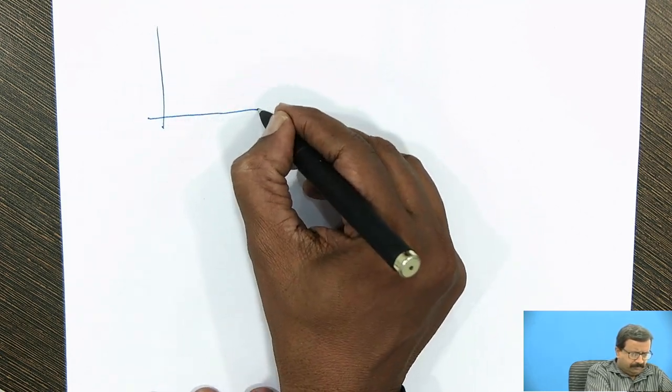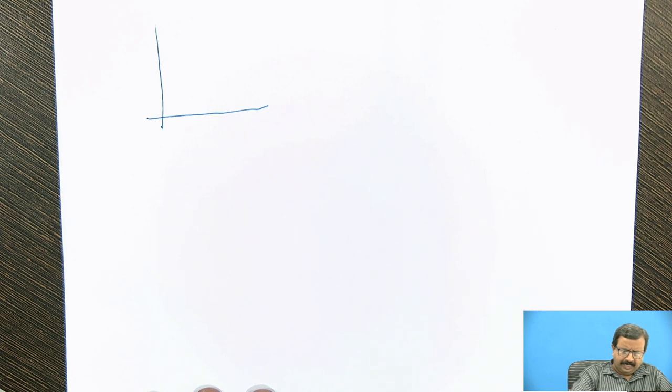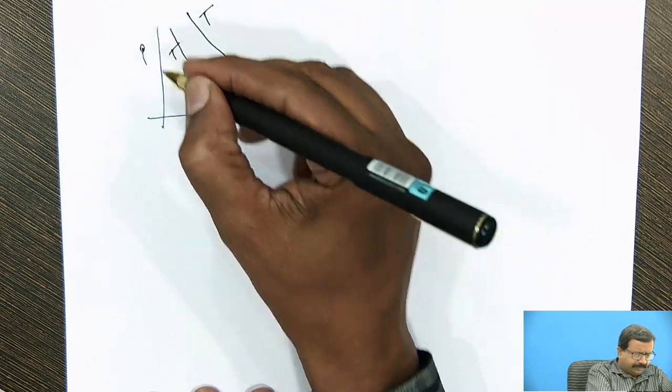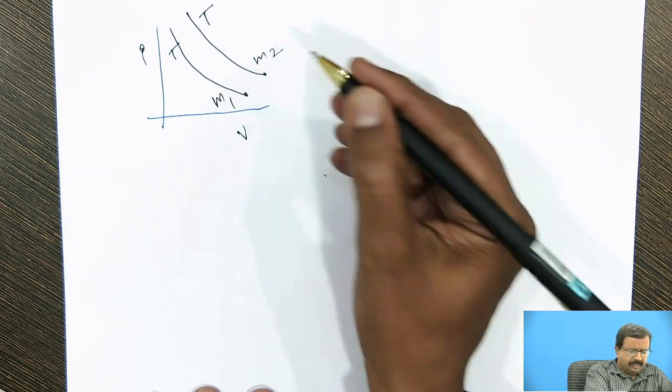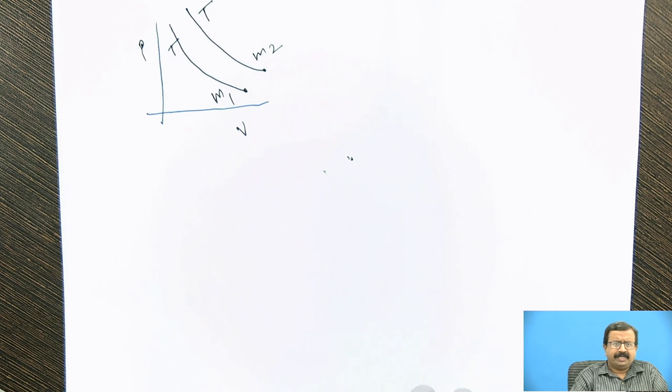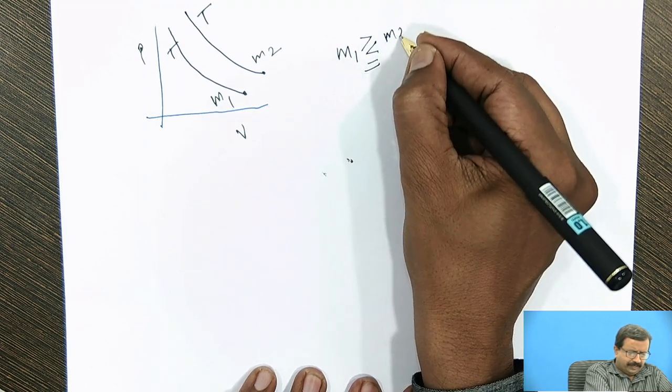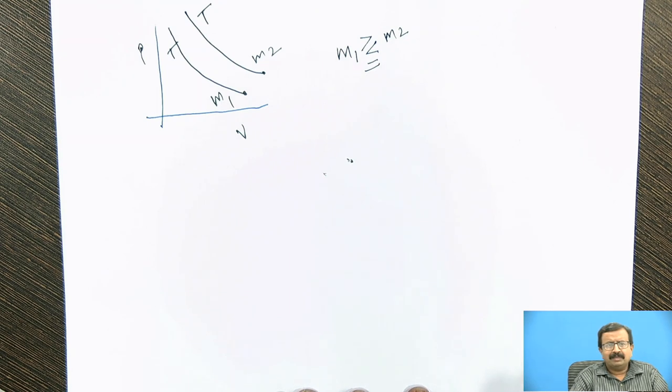Looking at the first law, I will ask a simple question. This is my PV diagram, and on this PV diagram I draw two curves where temperature is same, but the masses are different M1 and M2. My simple question is: if I have two systems with mass M1 and mass M2, and I have maintained the temperature constant by supplying them heat, then is M1 greater than, less than, or equal to M2? You have to justify it by the proper concepts of thermodynamics and specific heat. If possible, you can use the first law.